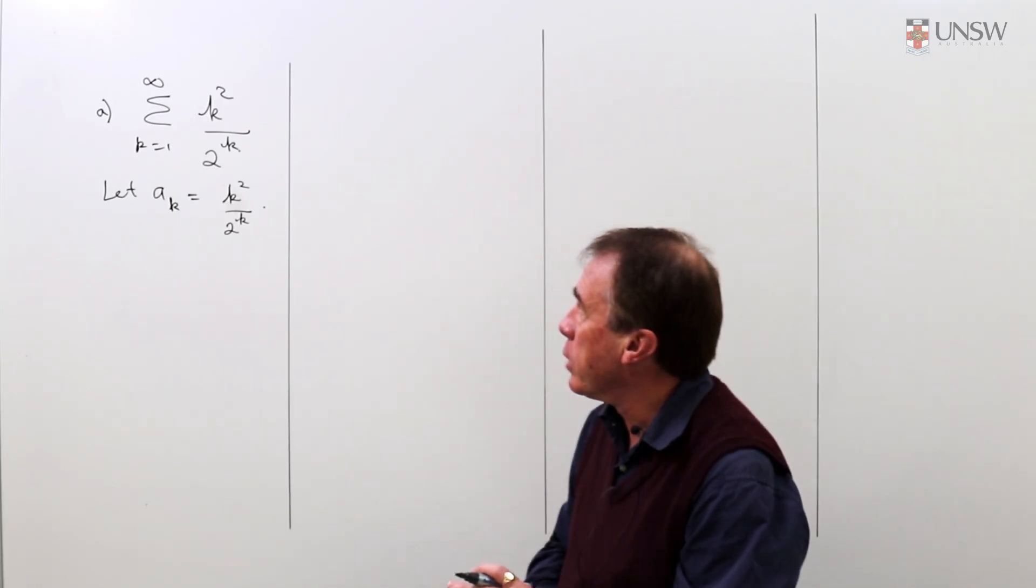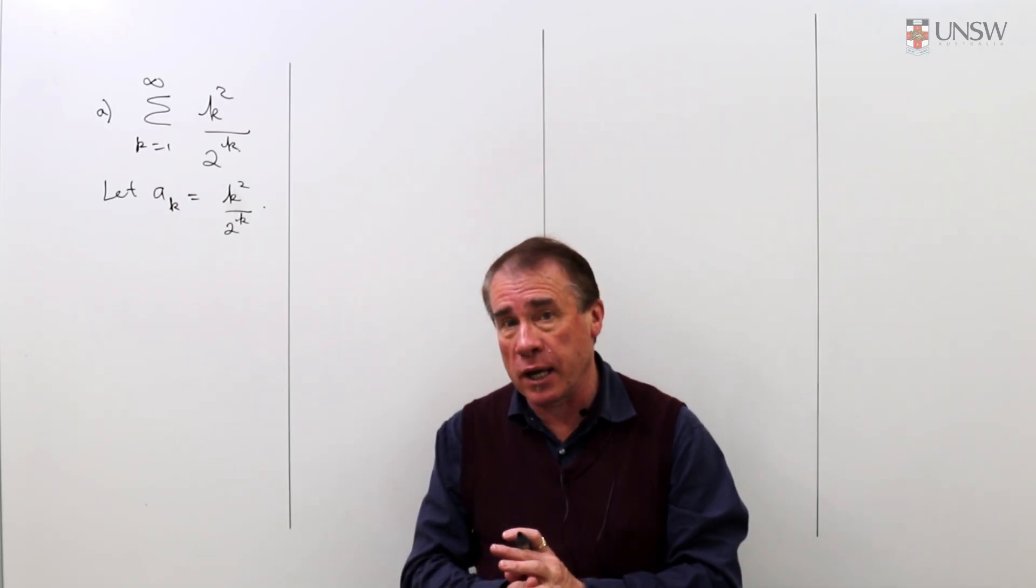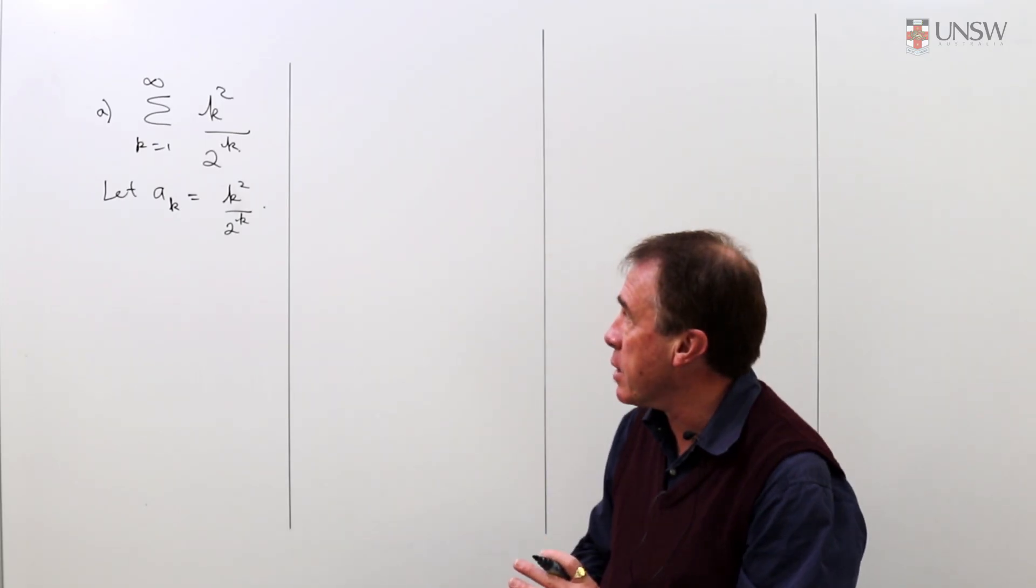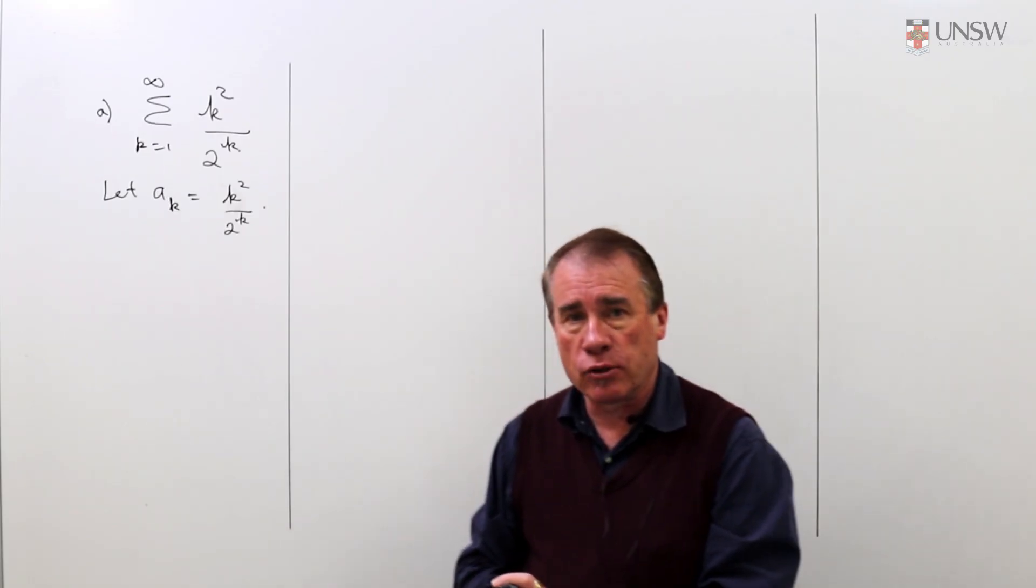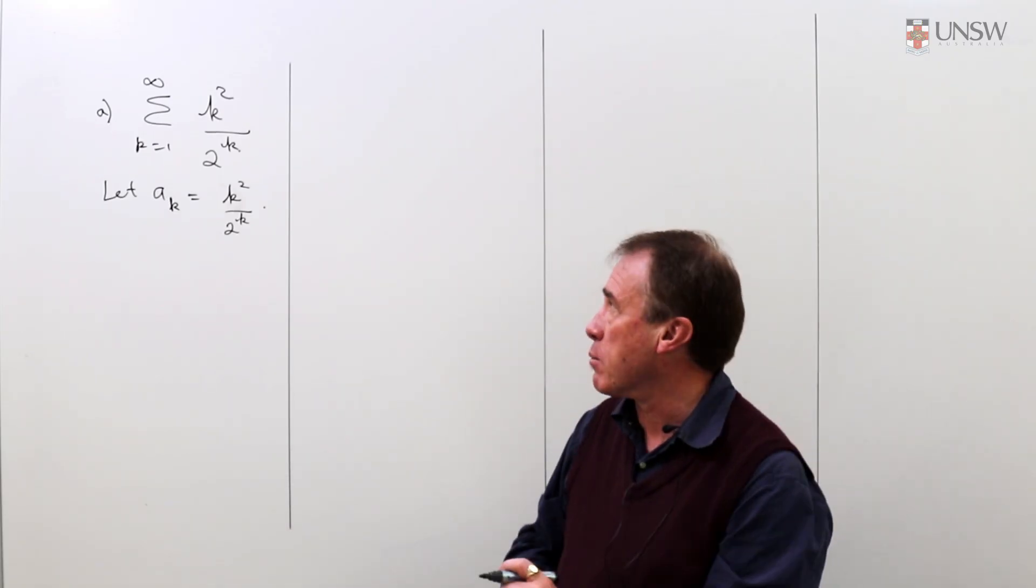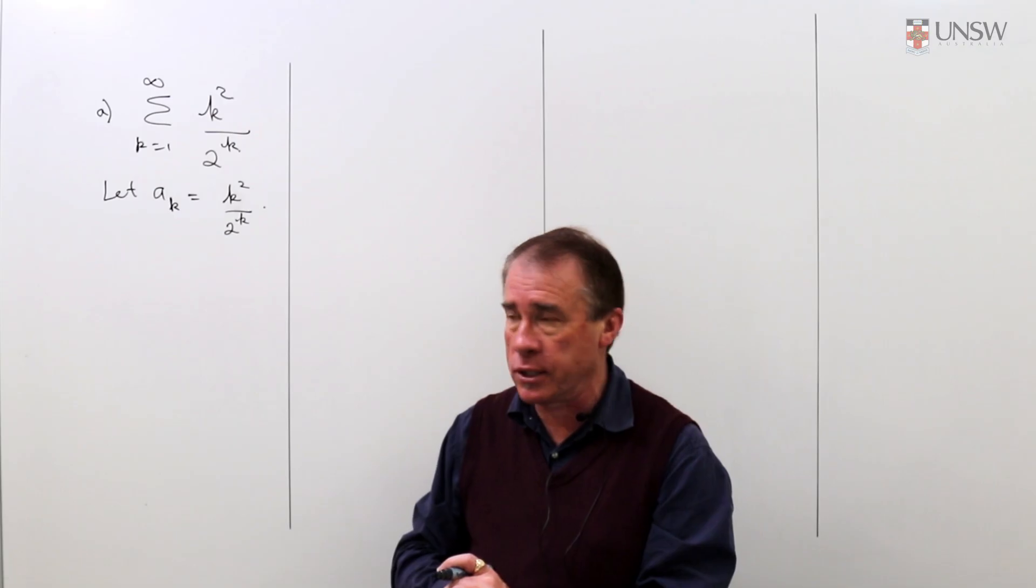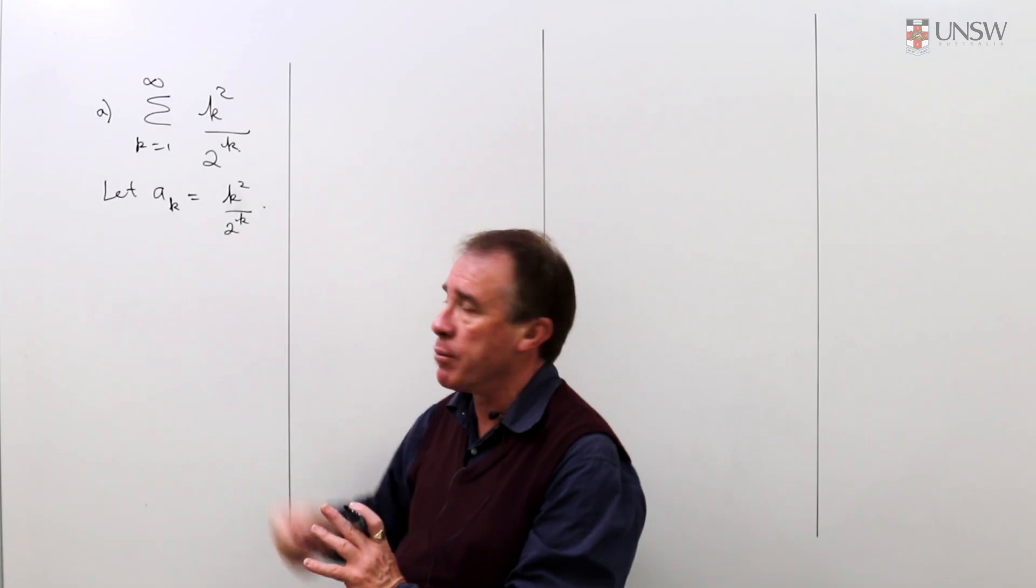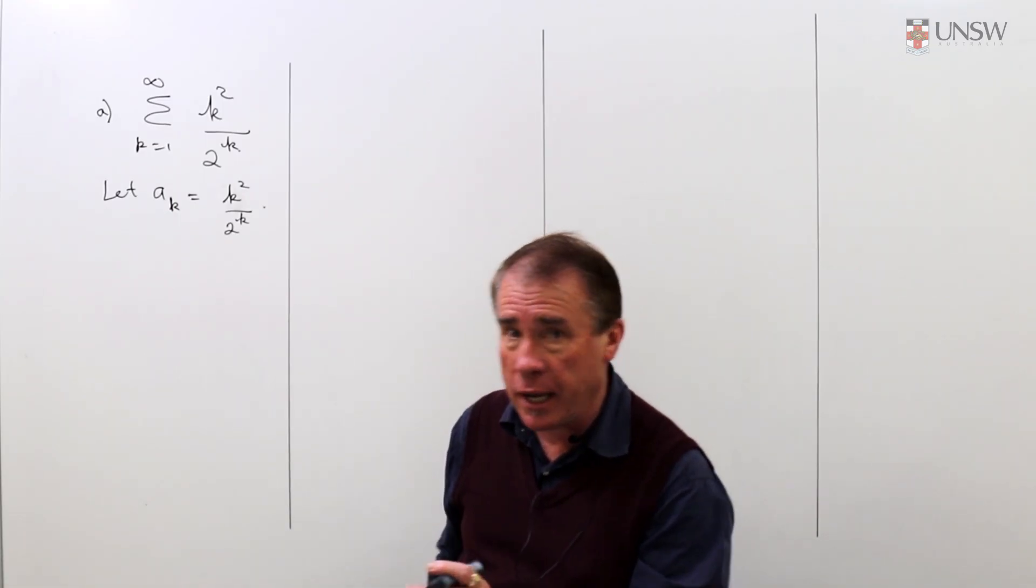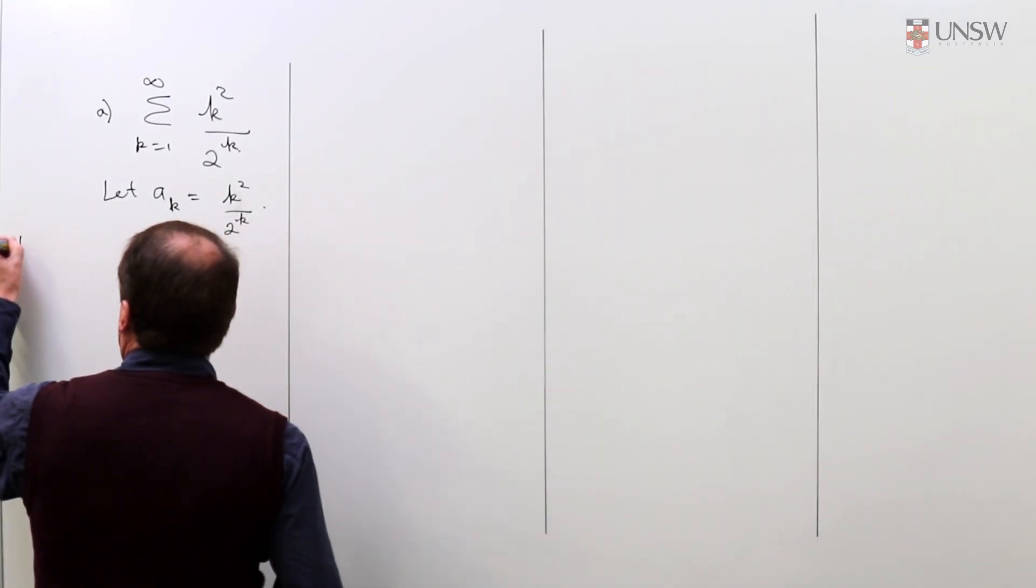In the first one we're looking at sigma k squared on 2 to the k. We want to know does this converge, that is do the partial sums approach some finite number as we take more and more terms in the series. I'm going to let a sub k be k squared on 2 to the k and we're going to use the ratio test.